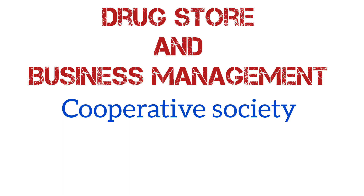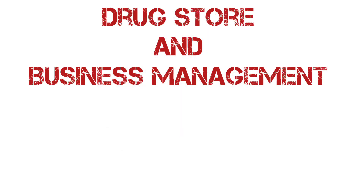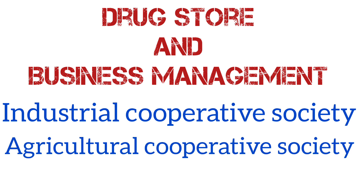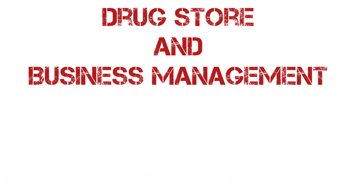Cooperative society is an organization where individuals come together to get goods at cheap rates for customers. All the people in the cooperative society fix a rate and get a licensing authority from the government. Types include industrial cooperative society, agricultural cooperative society, and consumer cooperative society. They also provide credit.